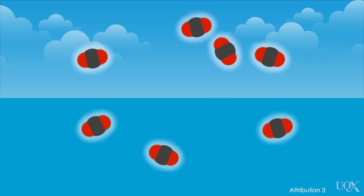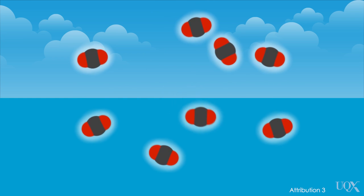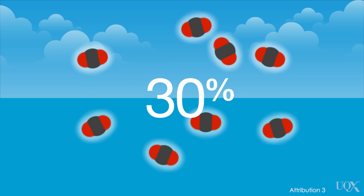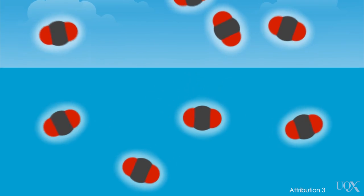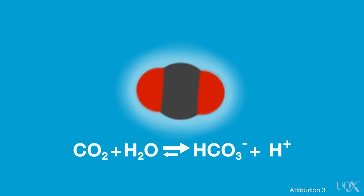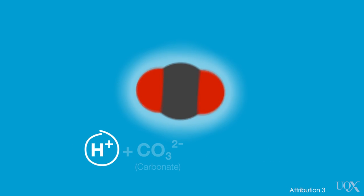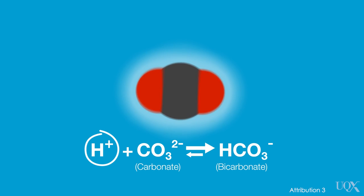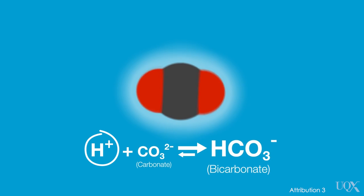As humans have added carbon dioxide to the atmosphere, an increasing amount has been absorbed by the upper layers of the ocean. This has caused a phenomenon known as ocean acidification. So far, around 30% of the carbon dioxide emitted into the atmosphere by humans has been absorbed by the ocean. Once carbon dioxide dissolves in the ocean, a number of chemical reactions take place. There is an increase in hydrogen ions, which manifests itself as a reduced ocean pH. Then some of those hydrogen ions react with carbonate ions to form bicarbonate ions.